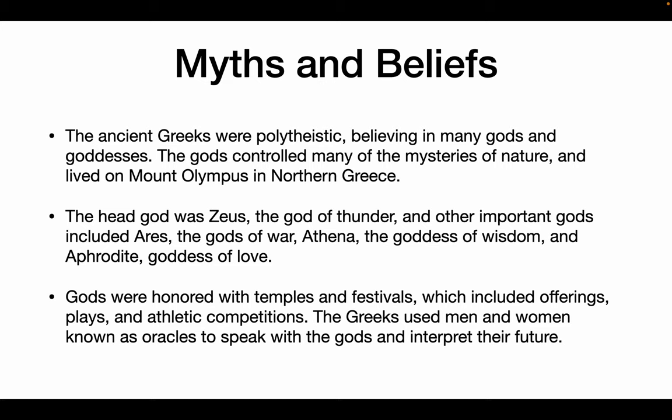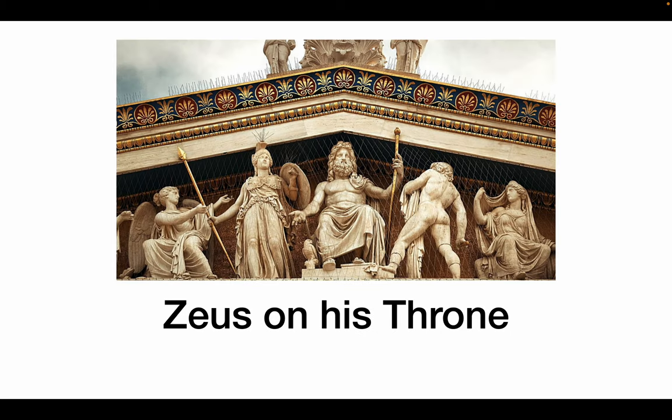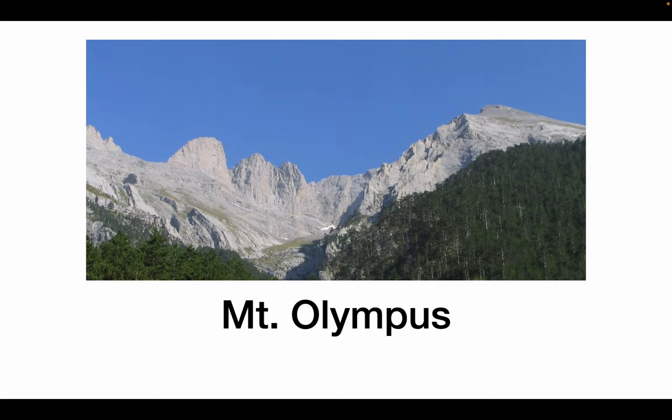The gods lived on Mount Olympus, a mountain in northern Greece. The main god was Zeus — the head of the 12 most important gods in the Greek pantheon and the god of thunder. We also had gods like Ares, god of war; Athena, goddess of wisdom; and Aphrodite, goddess of love, along with many many other gods. Gods were often honored with temples and with festivals, especially in certain cities that dedicated themselves to certain gods. Greeks used men and women known as oracles to speak with these gods — the job of an oracle is to interpret the future. This is Zeus sitting atop his throne, and this is Mount Olympus.